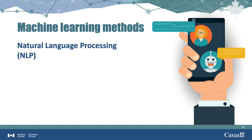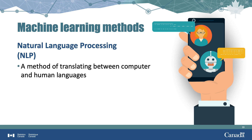Natural language processing is a method of translating between computer and human languages. The goal of natural language processing is to get a computer to read a line of text and understand the meaning just as a person would. An example is a chatbot. It expects people to type phrases like 'how do I' or 'I can't find,' followed by keywords referring to things one should be able to do or find on that particular website, and then provides the appropriate response. With each interaction, the chatbot learns to be more sophisticated in how it interprets what people type and how it phrases its responses.